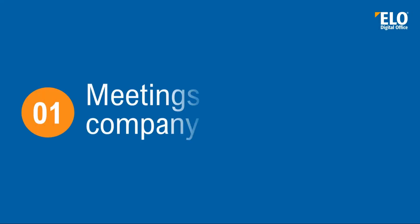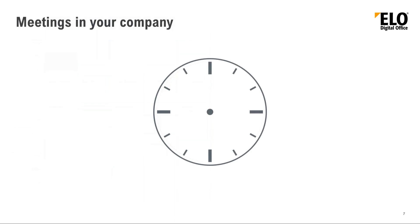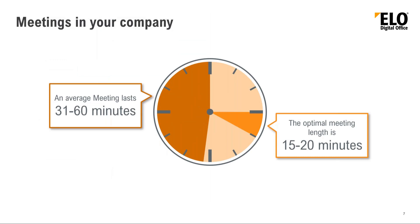Let's have a look at meetings in your company. Everybody has meetings today, and this is a typical meeting calendar. We have meetings on Monday, Tuesday, Wednesday, Thursday, and Friday. Some are daily meetings, some are department-related meetings, and some are project meetings. The optimal length of a meeting is 15 to 20 minutes.